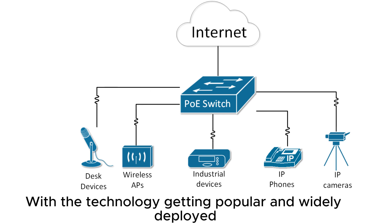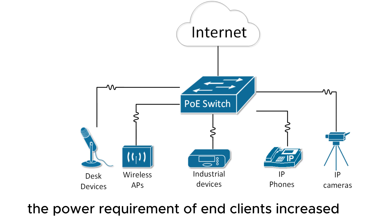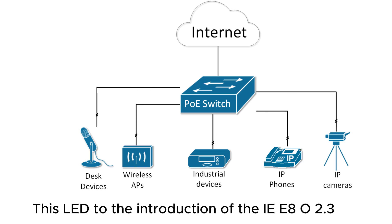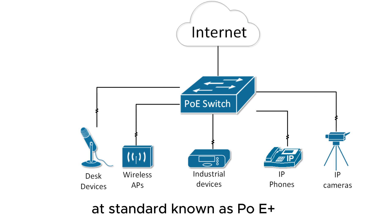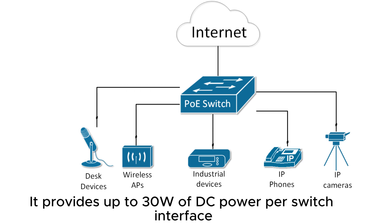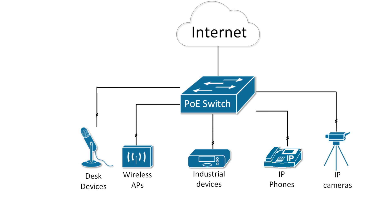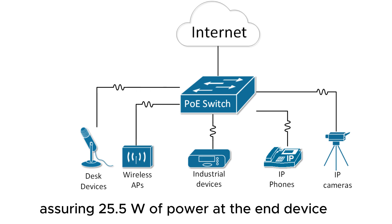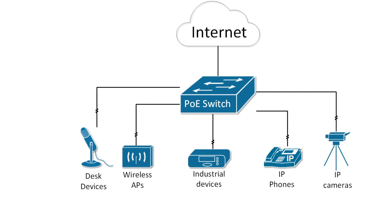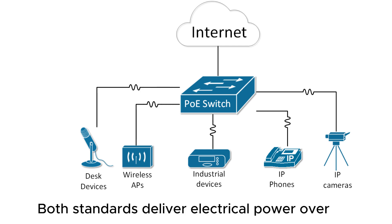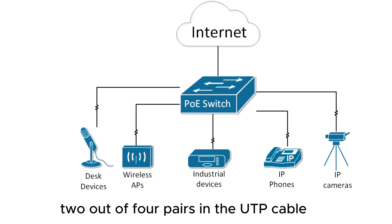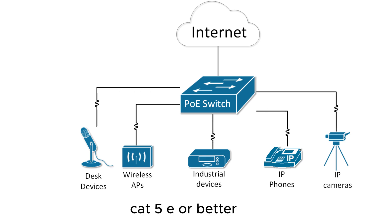With the technology getting popular and widely deployed, the power requirement of end clients increased. This led to the introduction of the IEEE 802.3at standard, known as PoE+. It provides up to 30 W of DC power per switch interface, assuring 25.5 W of power at the end device. Both standards deliver electrical power over two out of four pairs in the UTP cable, CAT5e or better.